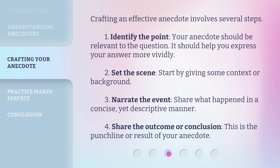Crafting an effective anecdote involves several steps. First, identify the point — your anecdote should be relevant to the question and help you express your answer more vividly. Second, set the scene by giving some context or background. Third, narrate the event — share what happened in a concise yet descriptive manner. Fourth, share the outcome or conclusion, which is the punchline or result of your anecdote.